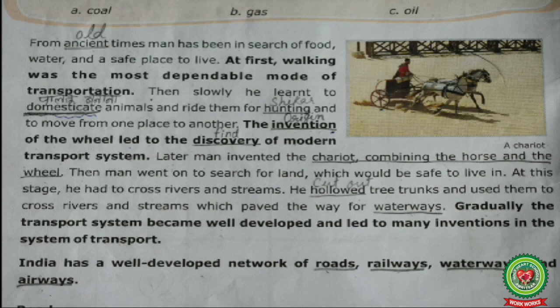So today we learned how men developed in the field of transportation: first he used to walk, then he domesticated animals, then he developed the wheel from which he made the chariot, then he also used waterways, and now India is making development in the fields of roads, railways, waterways and airways. Your homework is to revise terms, write in your copy, and re-read these paragraphs. Thank you.